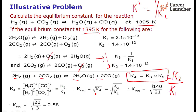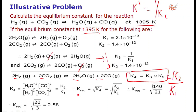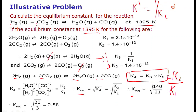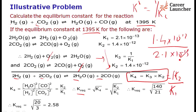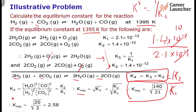The required K is for the reaction H₂ + CO₂ → H₂O + CO (without the factor of 2), so K required = K₄ to the power half, because the stoichiometric coefficients are halved. Therefore K required = (K₂/K₁)^(1/2) = (1.4 × 10⁻¹² / 2.1 × 10⁻¹³)^(1/2) = (140/21)^(1/2) = √(20/3) ≈ 2.58. This is how we solve this problem.